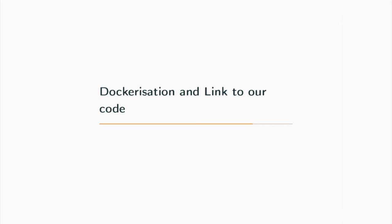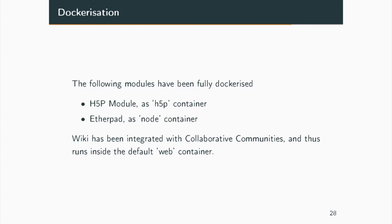Next is dockerization. The following modules have been fully dockerized: H5P runs as a separate Docker container named 'h5p', Etherpad runs as a separate Docker container named 'node', the collaborative communities runs on a 'web' container, and the database on 'db'. These four services are defined in the docker-compose file inside the collaborative communities and are fully operational. Since Django Wiki is a Django framework, it is already integrated inside the collaborative community system and runs inside the web container.